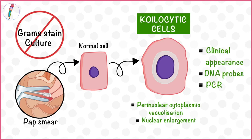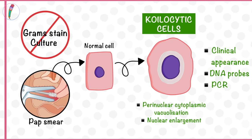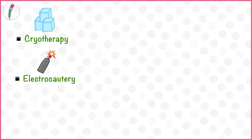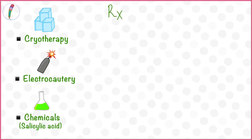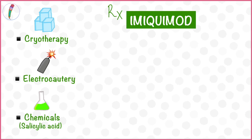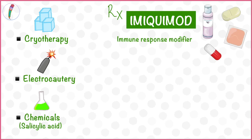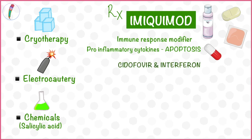Other methods of diagnosis include clinical appearance and using DNA probes or PCR testing. Warts are usually treated locally by cryotherapy, electrocautery, or using chemicals such as salicylic acid. The drug of choice to treat HPV infection is Imiquimod, which is an immune response modifier, available in multiple delivery systems. Imiquimod acts by inducing pro-inflammatory cytokines that cause apoptosis of the affected cells. Some other medications that have been used are virus-specific cidofovir and interferon.